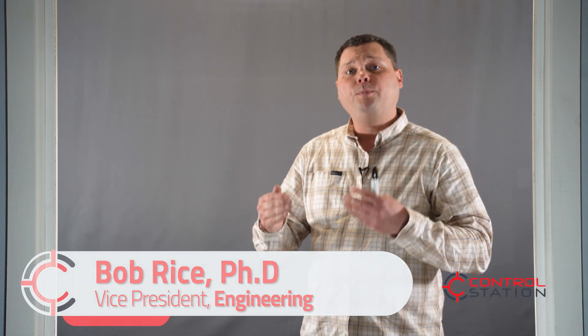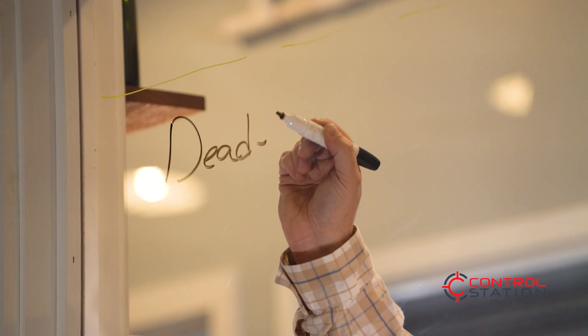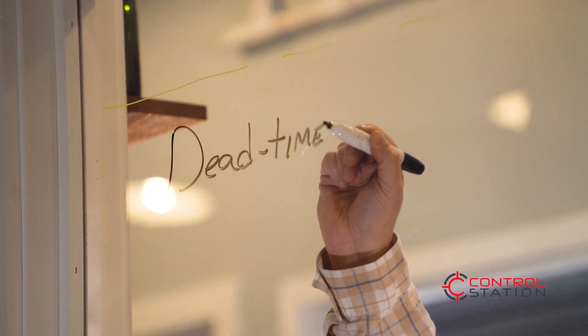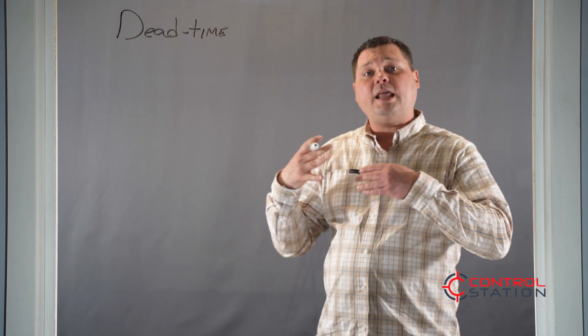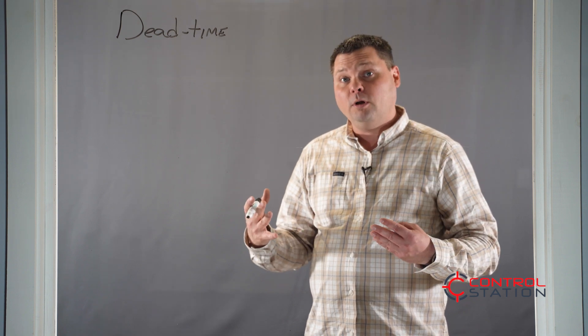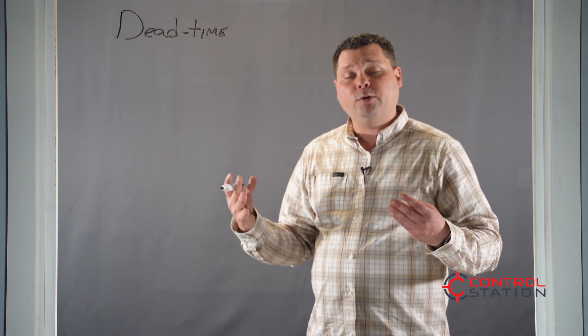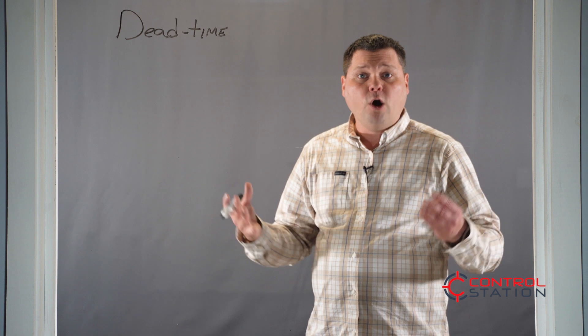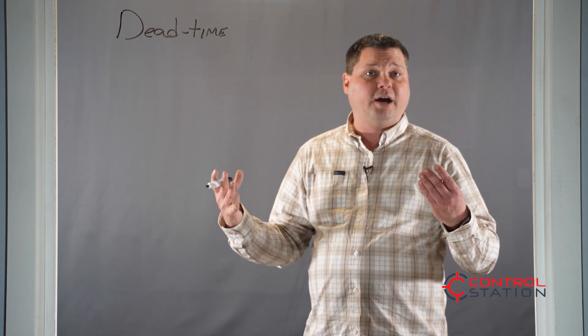Hello, I'm Bob Rice and in today's episode we're going to continue our discussion of the FOPDT model and how you can use it to describe the dynamics of a system. Today we're going to introduce the idea of dead time. The dead time is the model characteristic that tells us the delay of the system. This is the most observable model parameter that you have and one that you often just know intrinsically by working with the process.